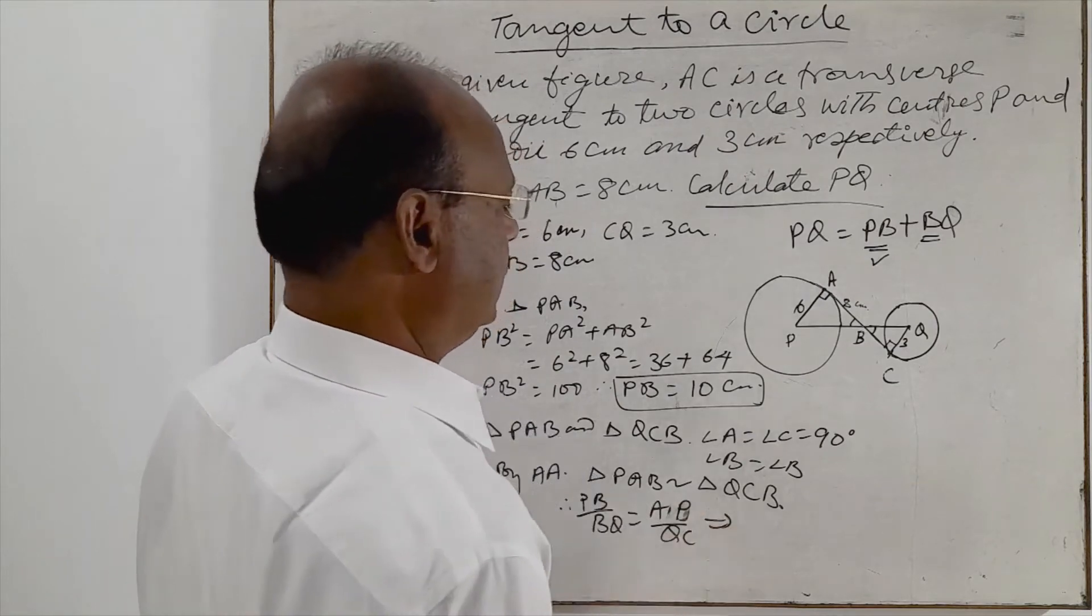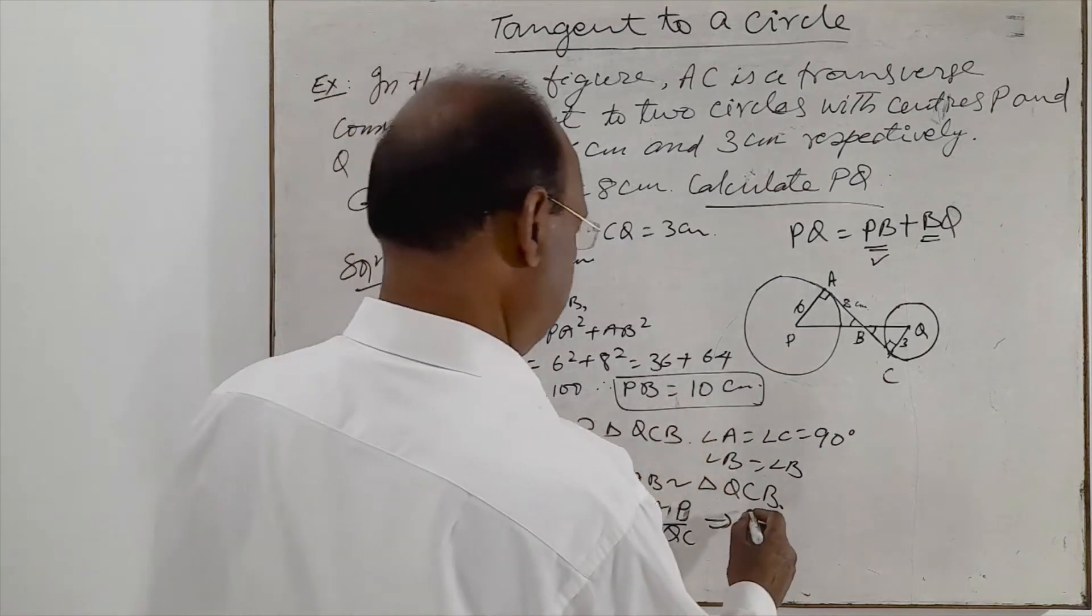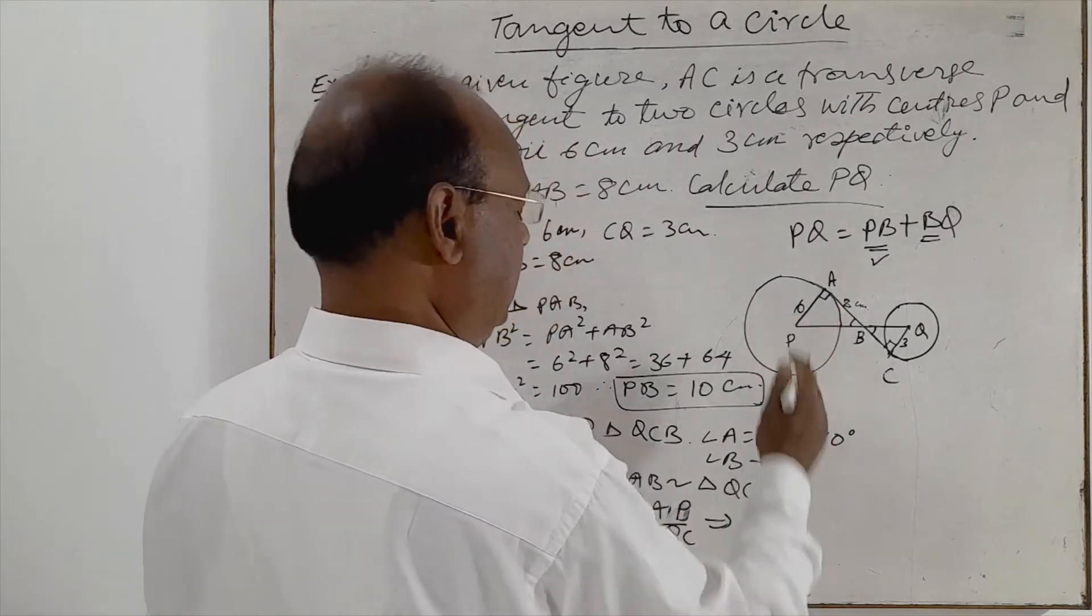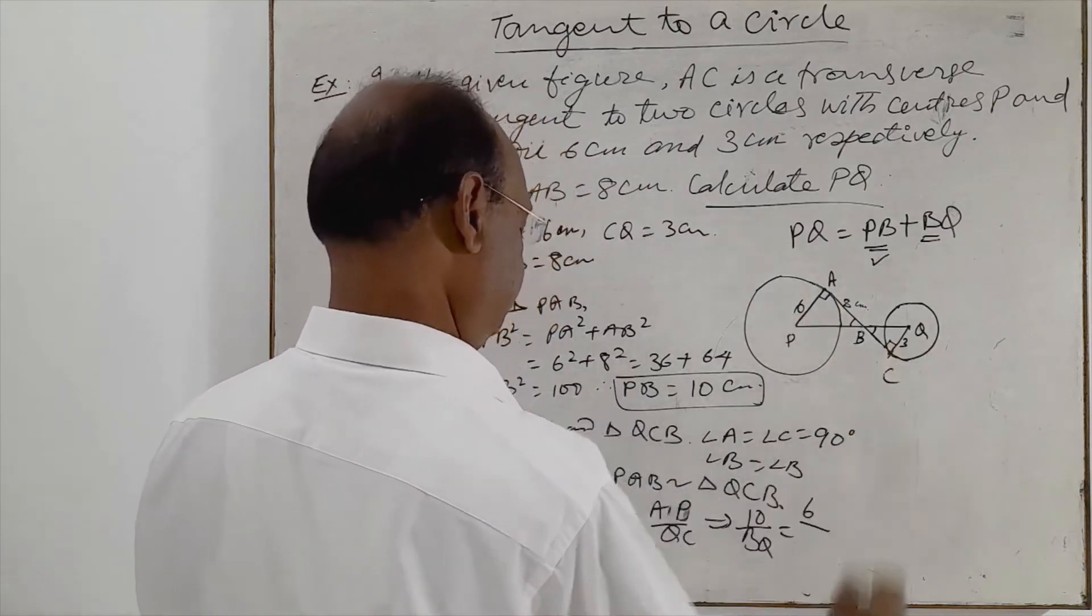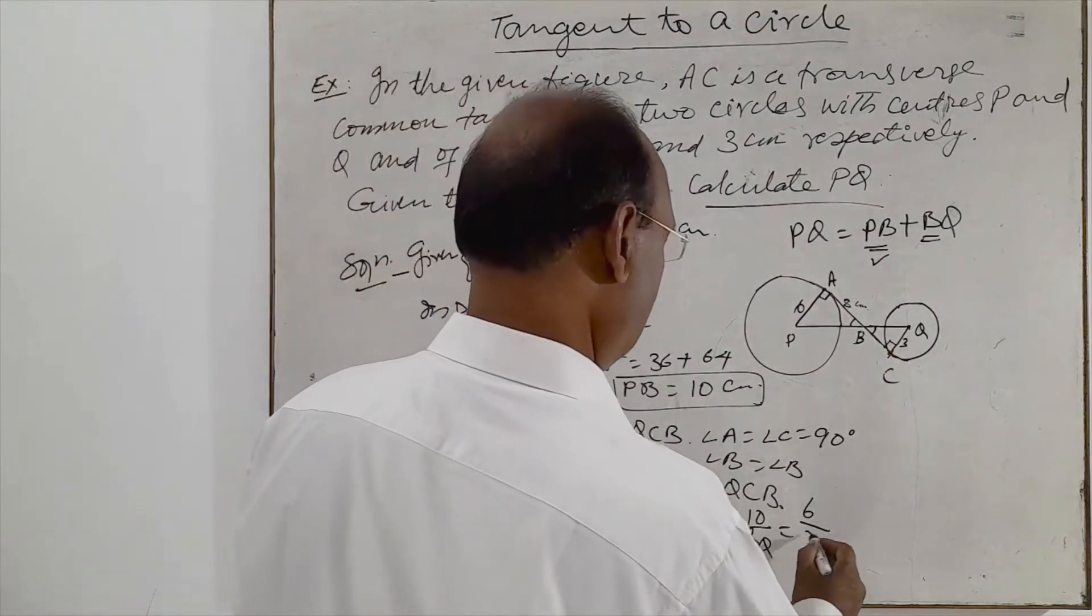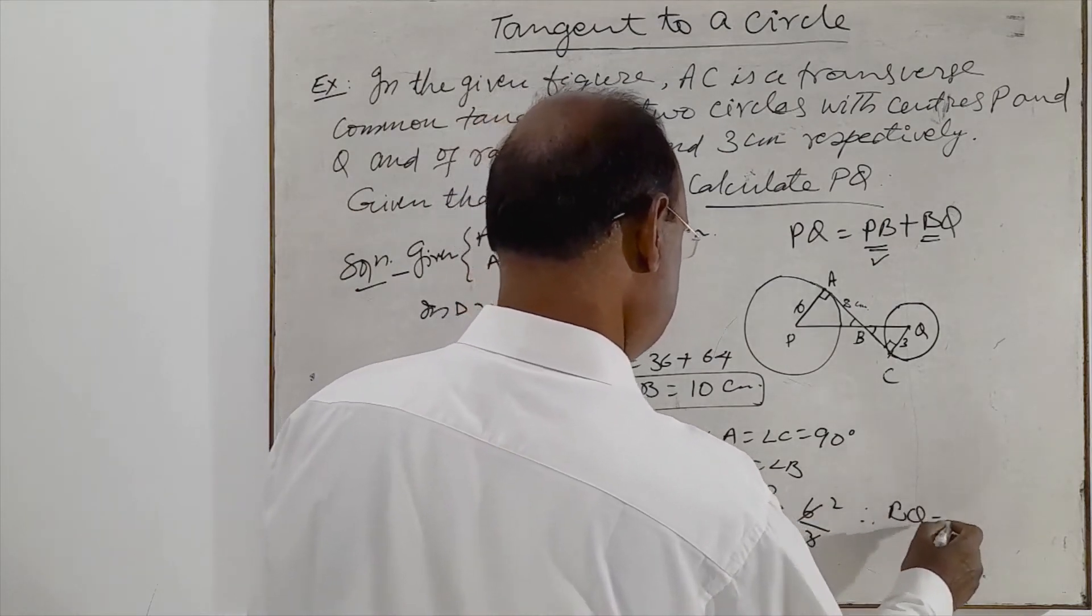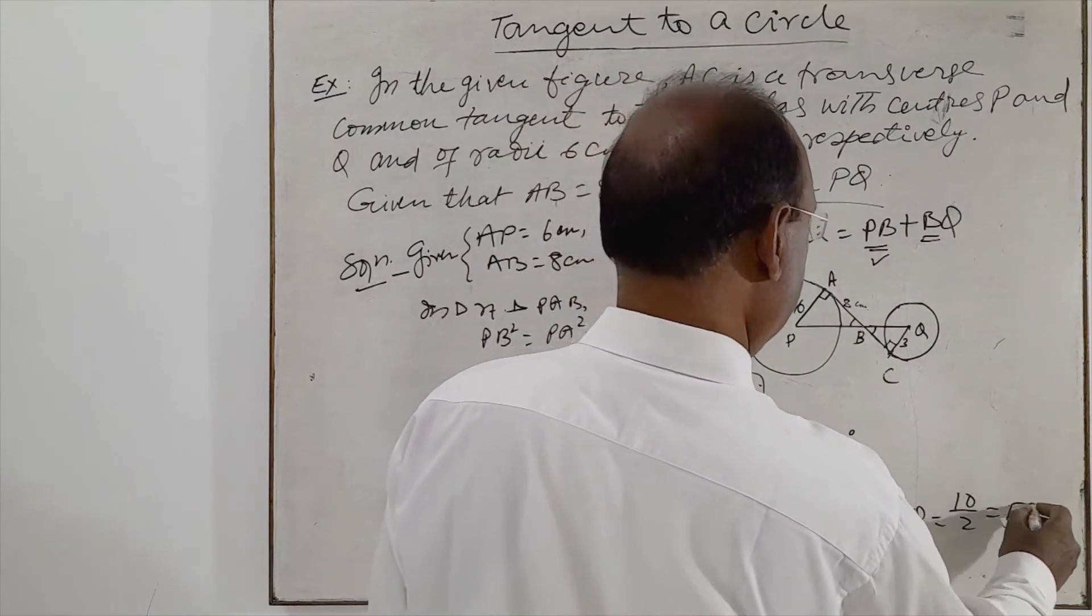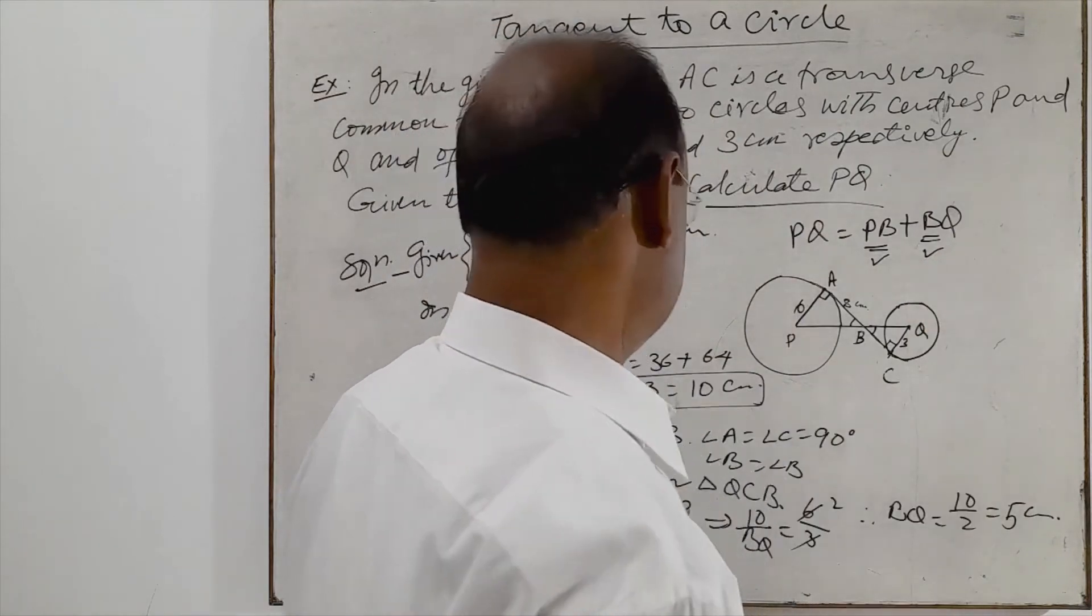And we are getting here, PB we have already got. So this is 10 by BQ is equal to AP is 6, and QC is 3. This is 2. And therefore, BQ is equal to 10 by 2, that is 5 centimeter. So BQ is equal to 5 centimeter.